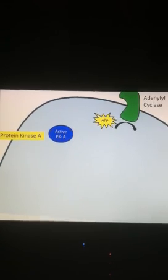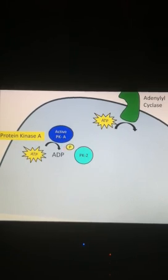Its job is to phosphorylate other molecules. So here's protein kinase number two. Now protein kinase A is going to phosphorylate it. It's going to take a phosphate from ATP and transfer it to this protein kinase.